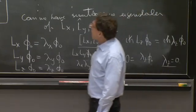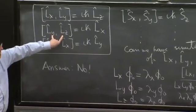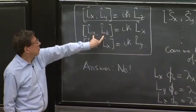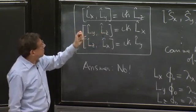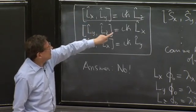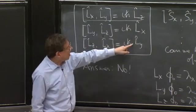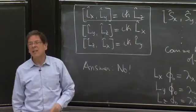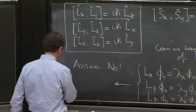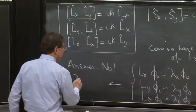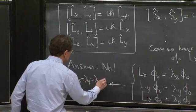By the other commutators, this commutator applied to phi naught would be 0, again, because each term produces a number, and the order doesn't matter. But then it would show that lambda x is 0. And this would show that lambda y is 0. So at the end of the day, if these three things hold, then all of them are 0.